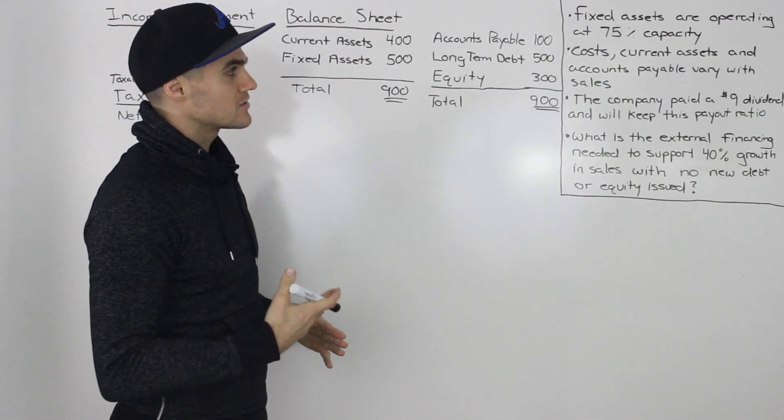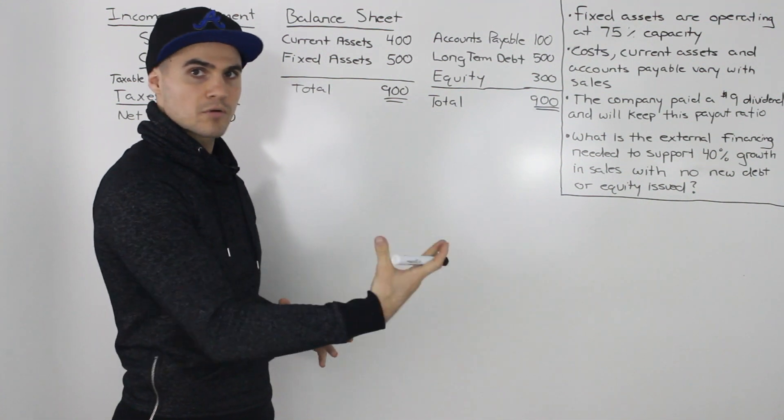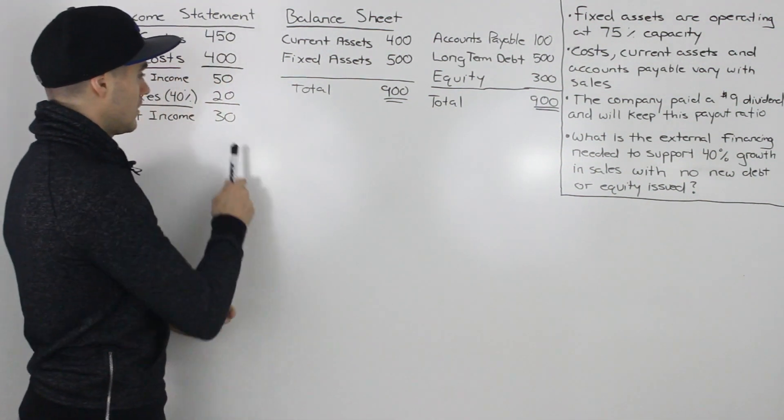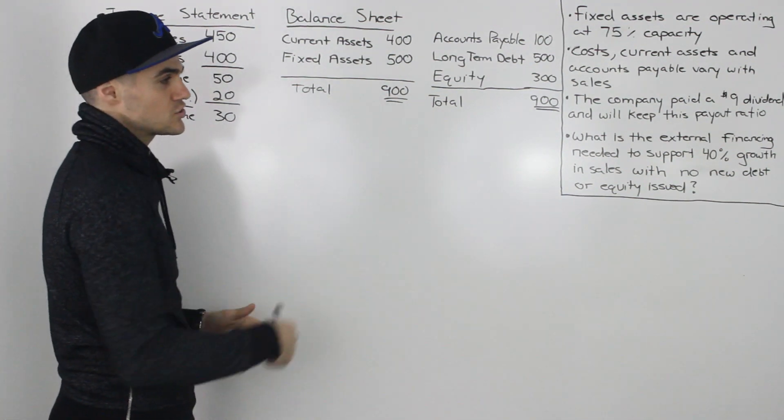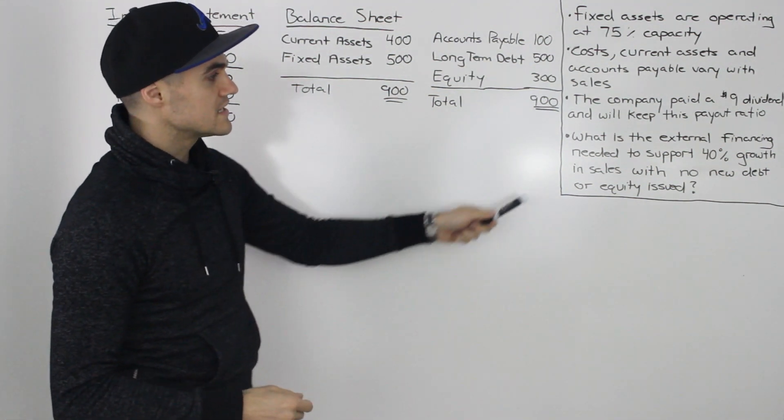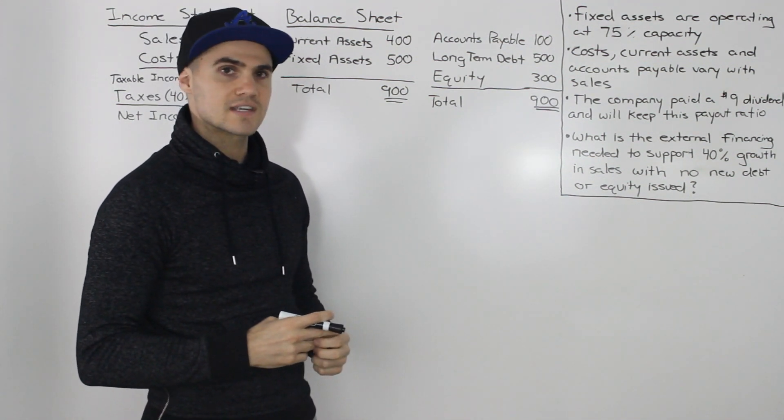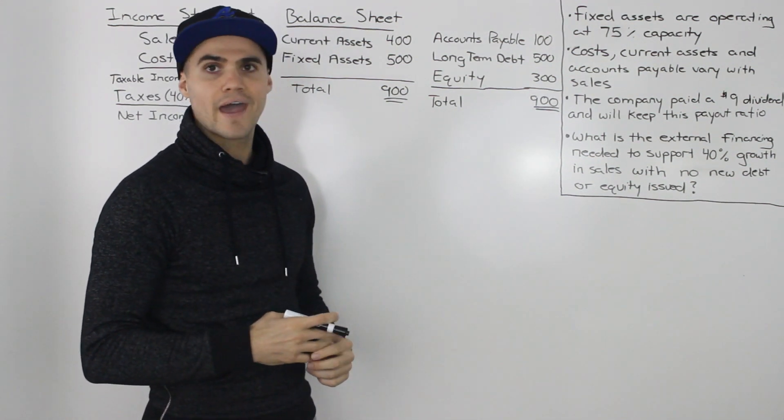Costs, current assets, and accounts payable vary with sales or they're proportionate to sales. The company paid a $9 dividend on this net income here and will keep that payout ratio for the future. What is the external financing needed to support 40% growth in sales with no new debt or equity issued?